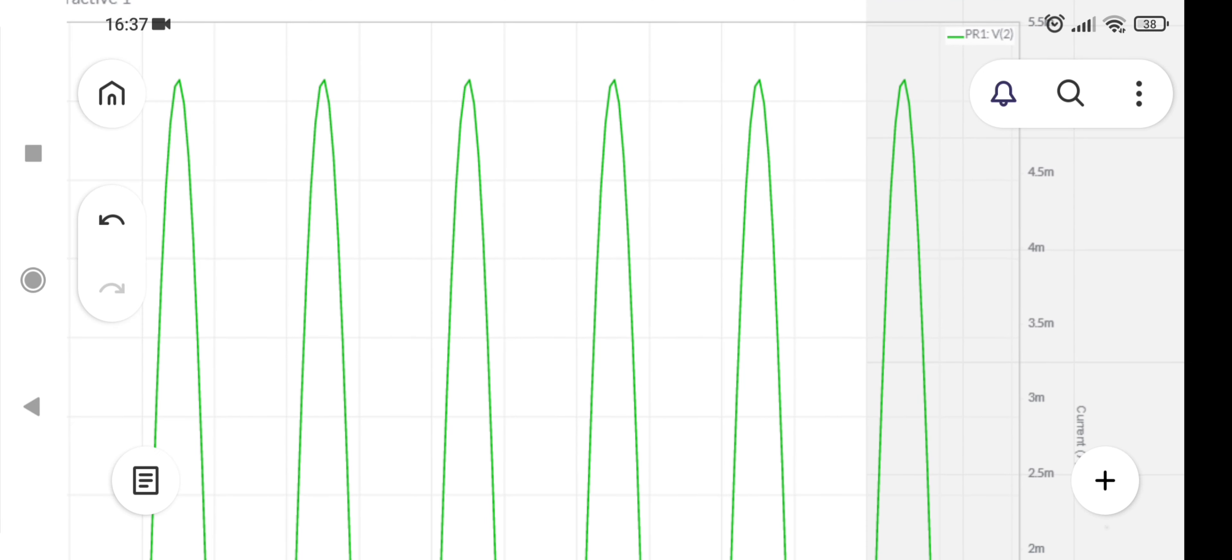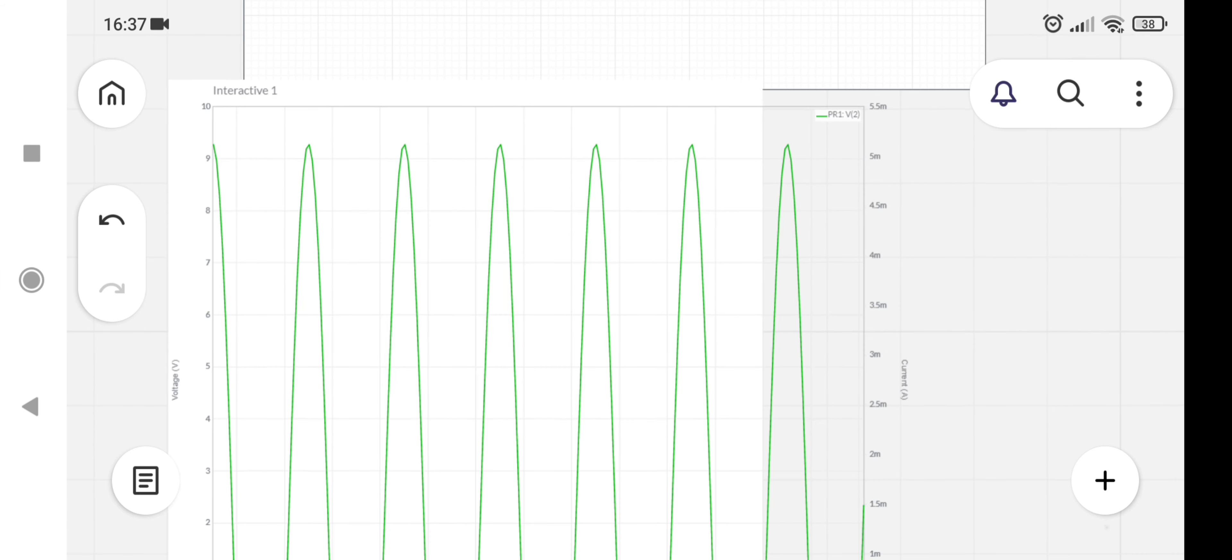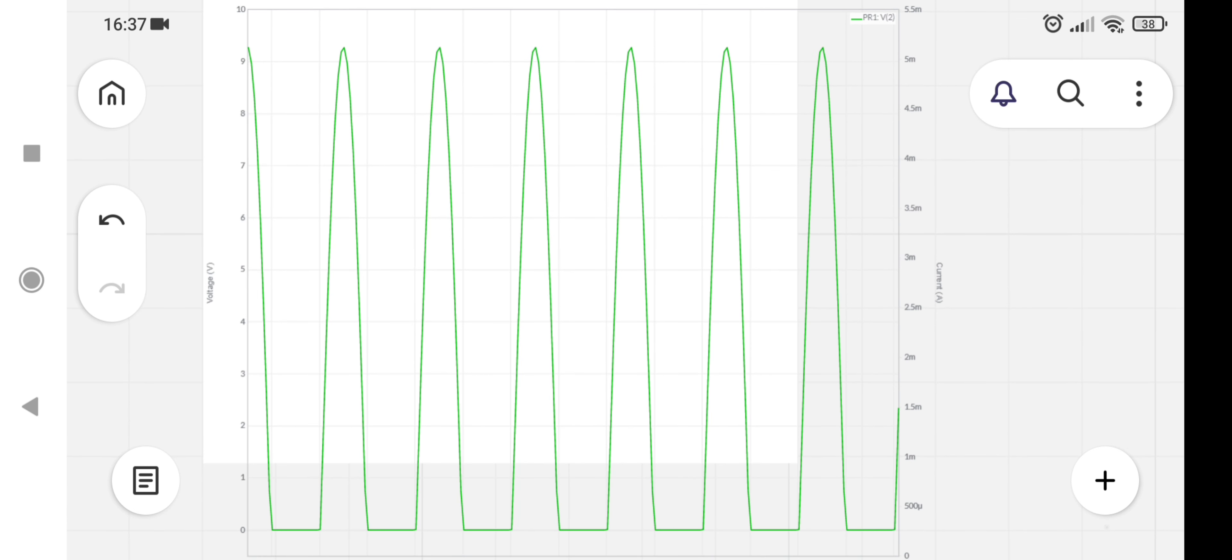We get the output of the circuit like this: pulses of 9.3 volts. This is pulsating DC. Its negative half cycle is clipped because of the diode.